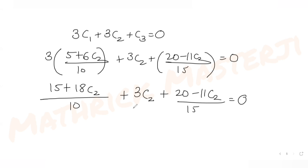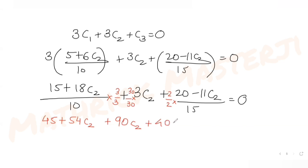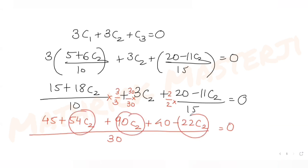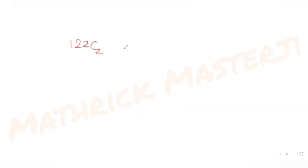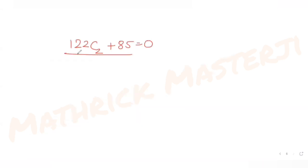The denominators are 10 and 15, so LCM is 30. Multiplying through: (45 + 54c2) + 90c2 + (40 − 22c2) = 0 over 30, giving 122c2 + 85 = 0 (since 54 + 90 − 22 = 122 and 45 + 40 = 85). Therefore c2 = −85/122.